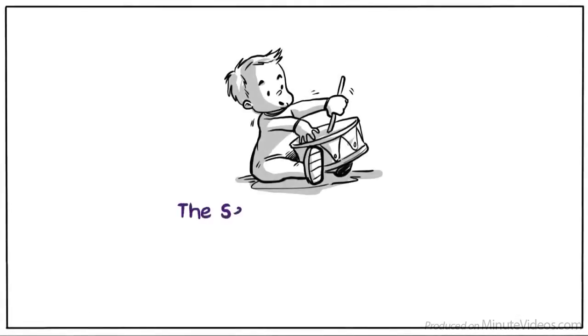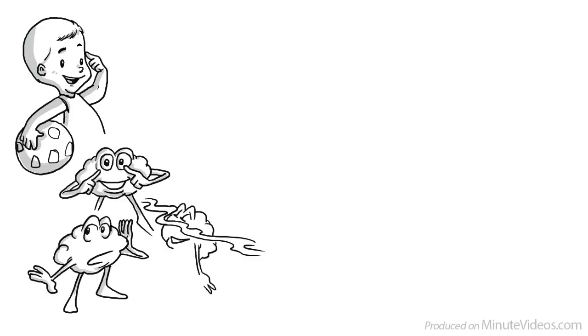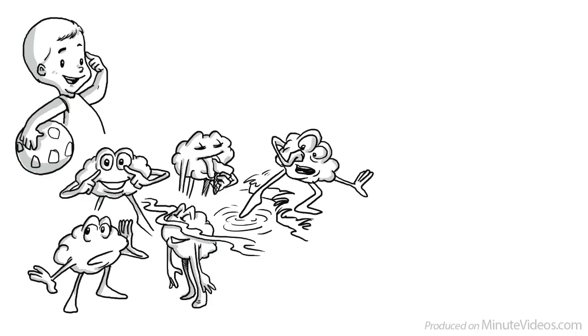One, the sensory motor stage, ages birth to two. In the sensory motor stage, we develop through experiences and movement our five senses. Our brain wants to see, hear, smell, taste and touch as much as possible.